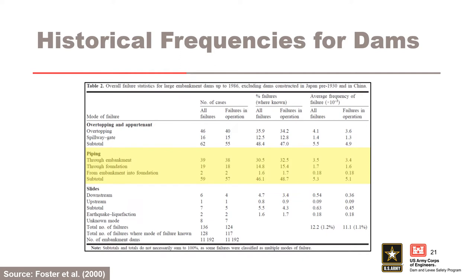Statistics of failure of large dams constructed between 1800 and 1986 show that approximately one half of cases of failure in operation were due to internal erosion. The largest number of failures occurred through the embankment, and nearly one half of these were associated with conduits or walls which penetrate the embankment. Approximately two thirds of all failures and one half of all accidents occurred on first filling or in the first five years of reservoir operation. Nearly all failures through the embankment occurred when the reservoir level was at or near — typically within one meter — the pool of record.